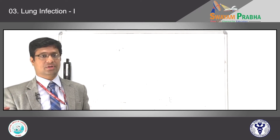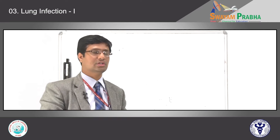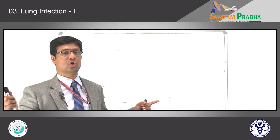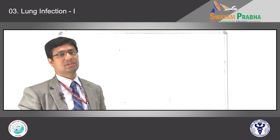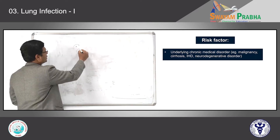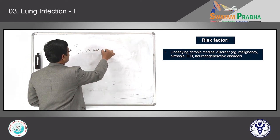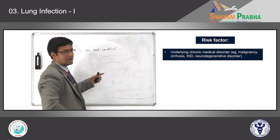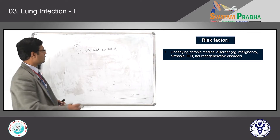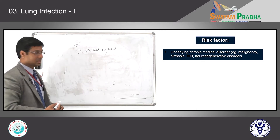In the elderly age group, the immune system is suppressed or decreased, and the mucociliary escalator is also decreased, so those patients are more prone to lung infection. Early age and late age are the most common age groups affected. For middle-age individuals, any patient having a chronic medical condition — malignancies, chronic liver disease, chronic heart disease, or neurodegenerative disorders — will have their normal defense mechanisms affected.